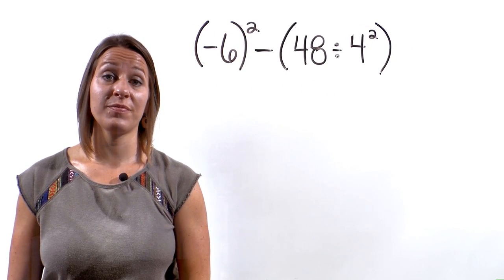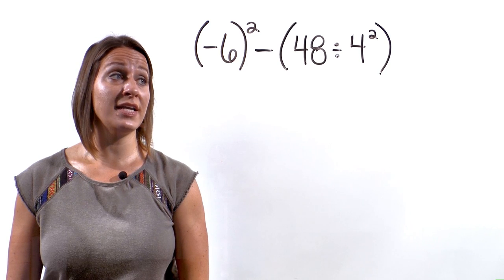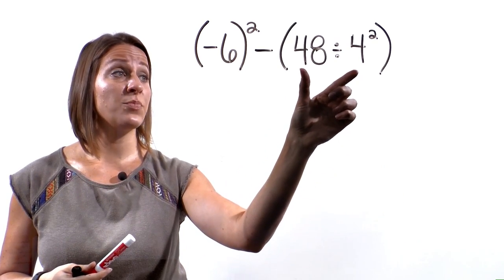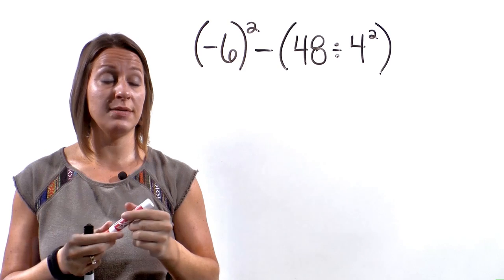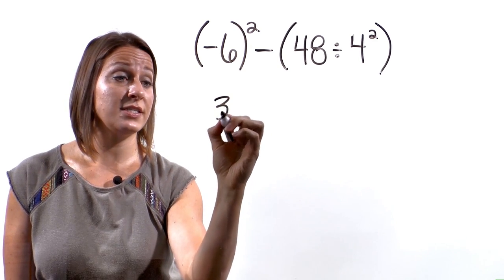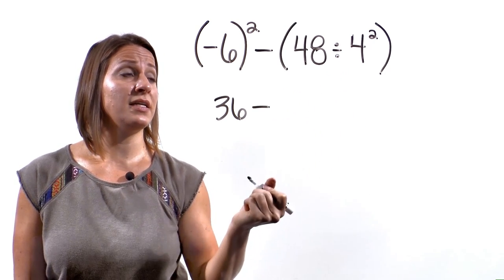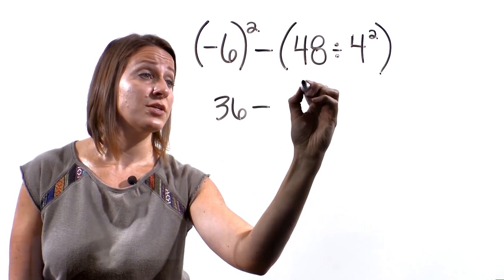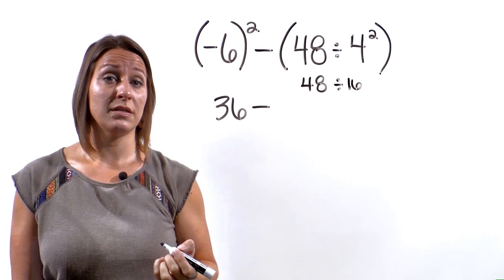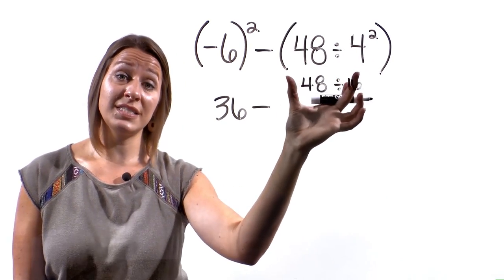Okay, let's do one more example together. We have negative 6 quantity squared minus 48 divided by 4 squared. The first thing we'll do is we'll actually work through the parentheses and the exponents on the same step. So over here we have negative 6 squared, which negative 6 times negative 6 is 36 minus... Right here we have 48 divided by 4 squared, which 4 squared is 16. So we actually, I'll put it right here, we have 48 divided by 16.